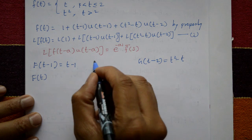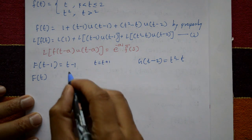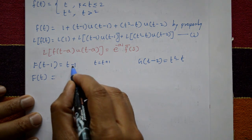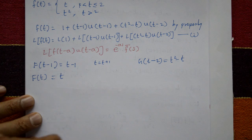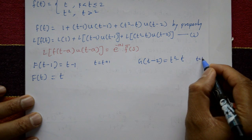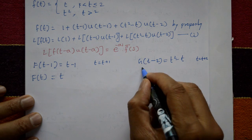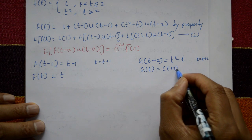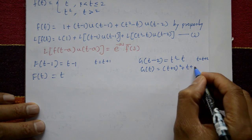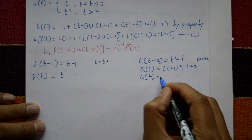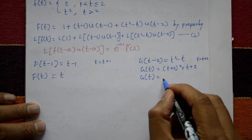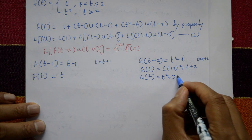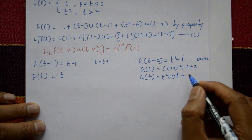For f(t): setting t = t + 1 gives f(t) = t, so F̄(s) = 1/s². For g(t): setting t = t + 2, g(t) = (t + 2)² − (t + 2) = t² + 4t + 4 − t − 2 = t² + 3t + 2.